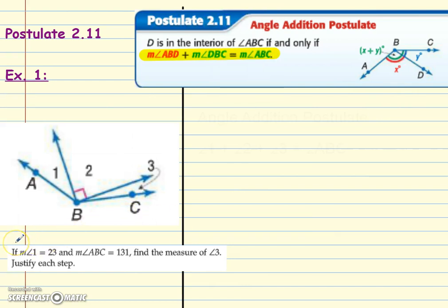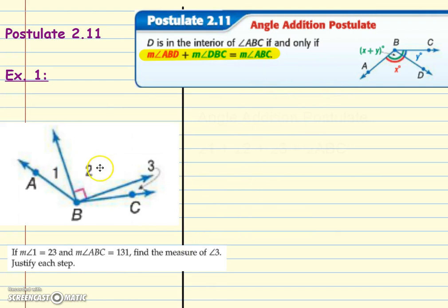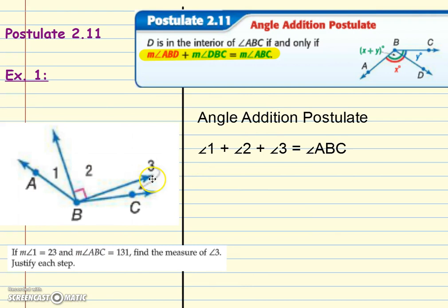So we have our first example. We've got three angles, and it says angle 1 is 23 degrees. The measure of angle ABC — the whole thing — is 131 degrees, and we need to find the measure of angle 3. This says justify each step as well. Now we just learned about the Angle Addition Postulate, so we're going to use it — each little angle adds up to be the big angle. That's the Angle Addition Postulate.